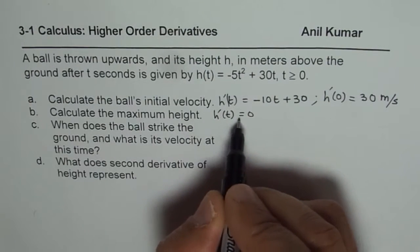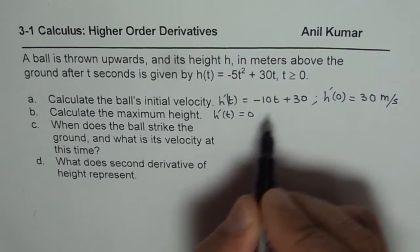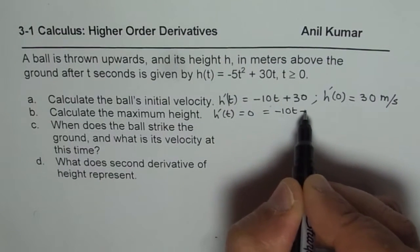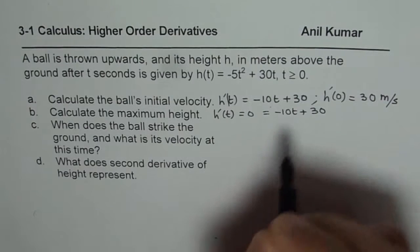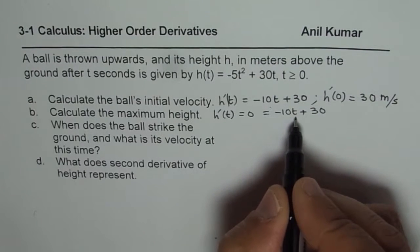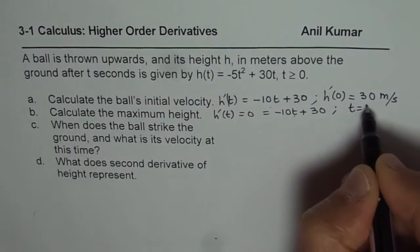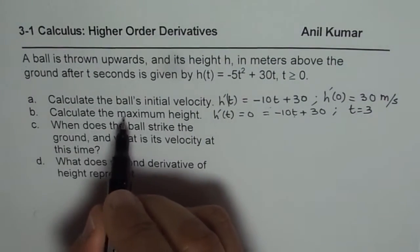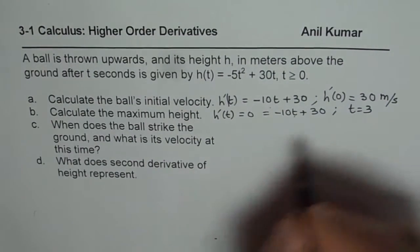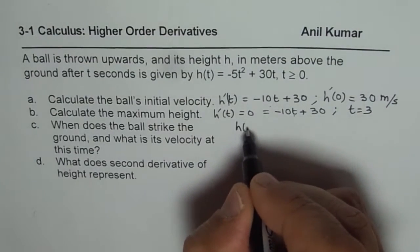Let us first find the time. Equating velocity to 0, that is h'(t). So the equation is -10t + 30. Solving for t, at t equals to 3 it will be 0, so we get t = 3.